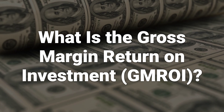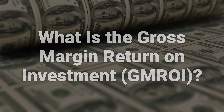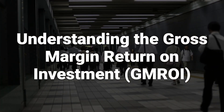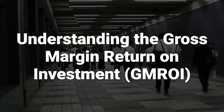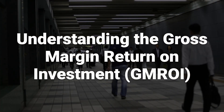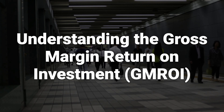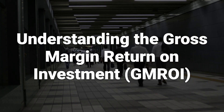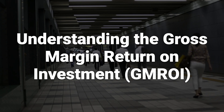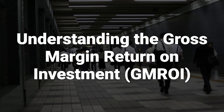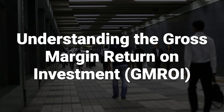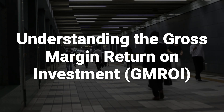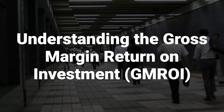GMROI is also known as the Gross Margin Return on Inventory Investment. The GMROI is a useful measure as it helps the investor or manager to see the average amount that the inventory returns above its cost. A ratio higher than 1 means the firm is selling the merchandise for more than what it costs the firm to acquire it, and shows that the business has a good balance between its sales, margin, and cost of inventory.